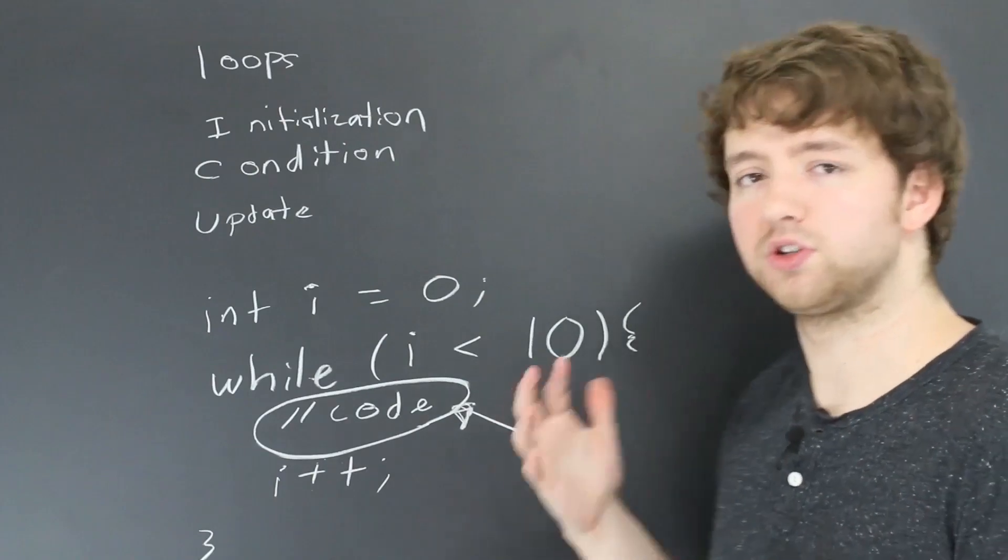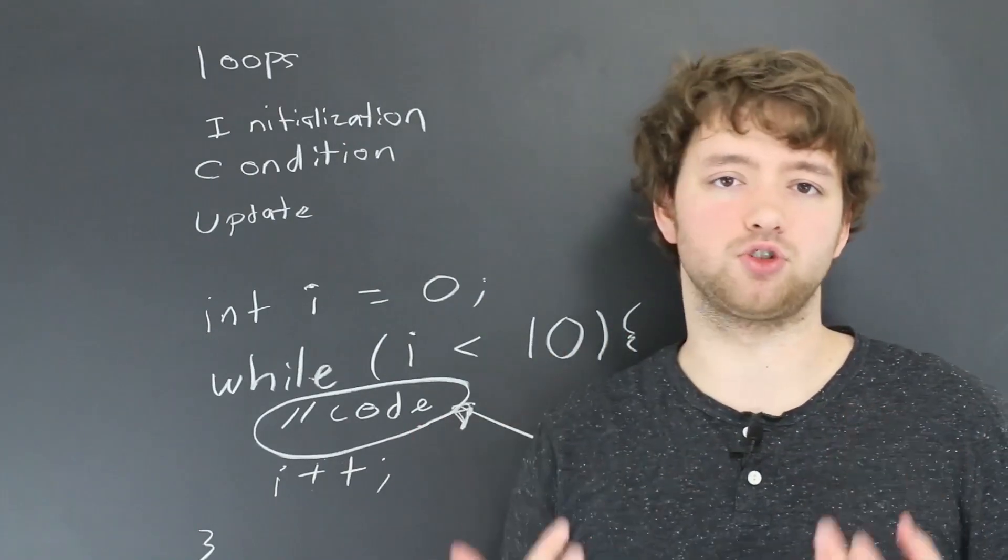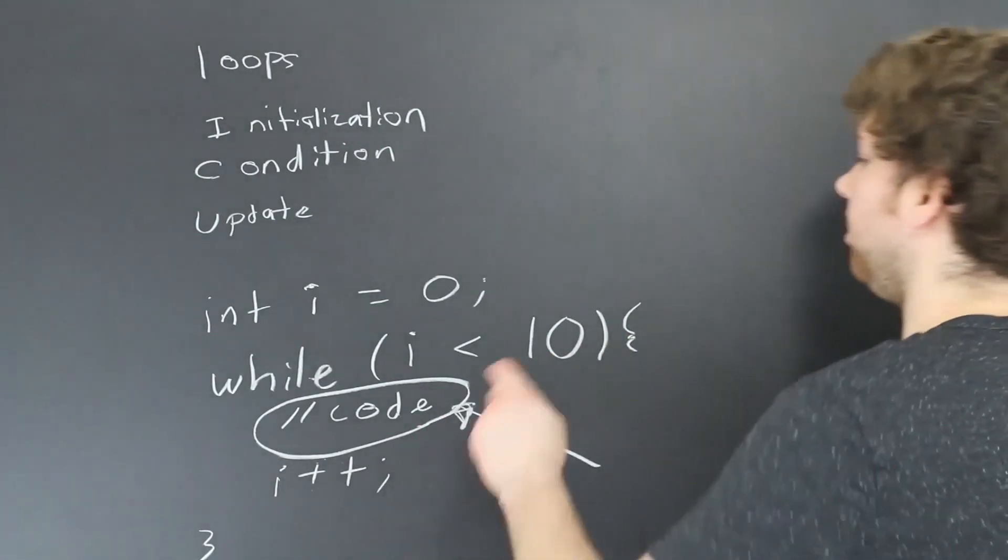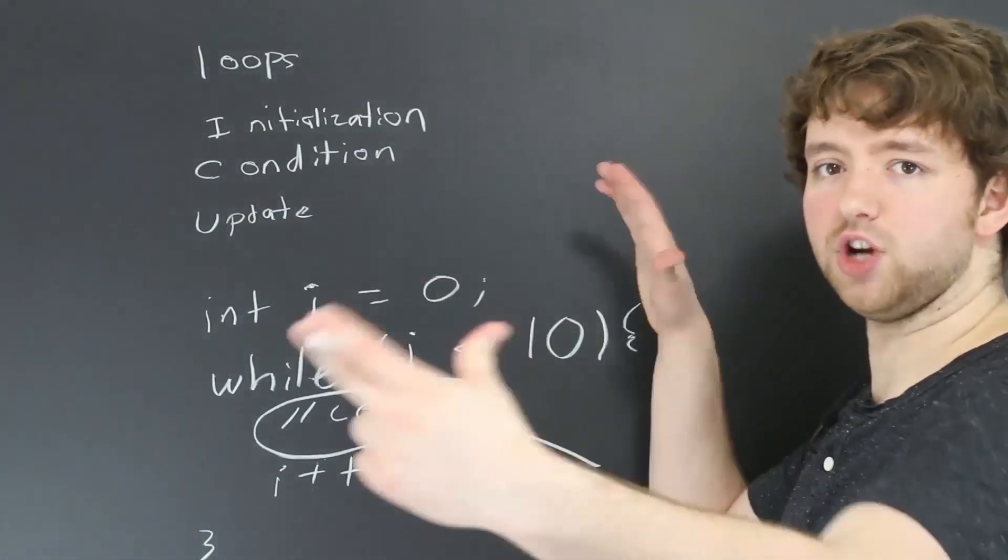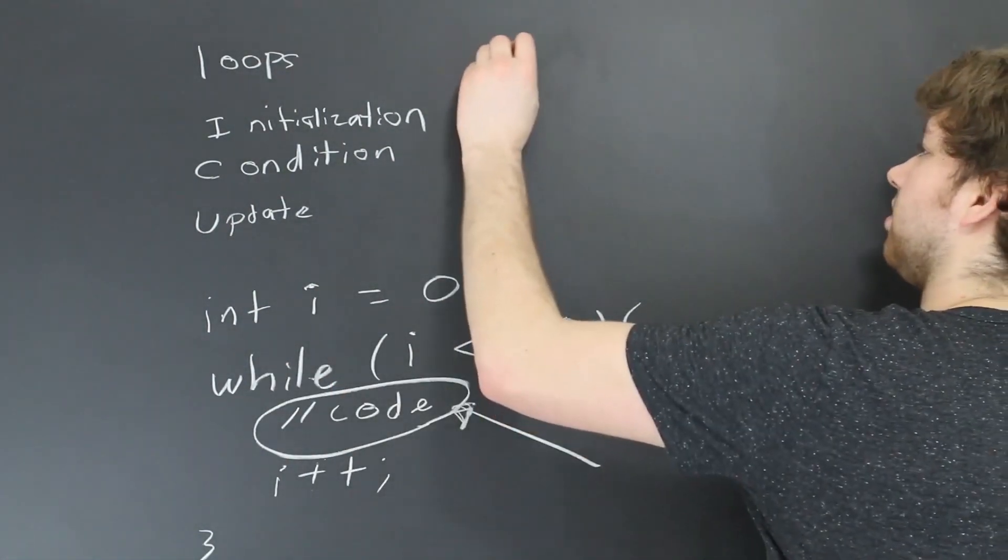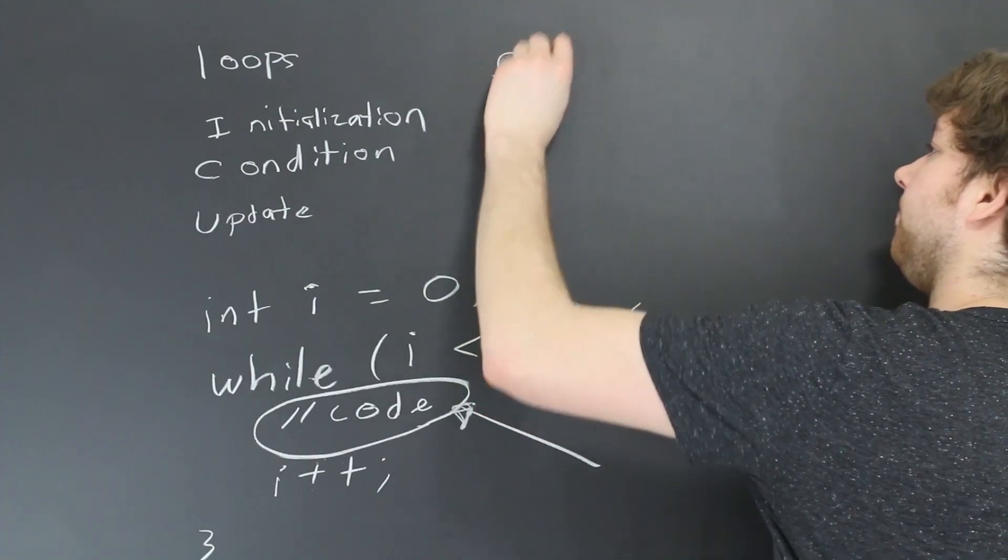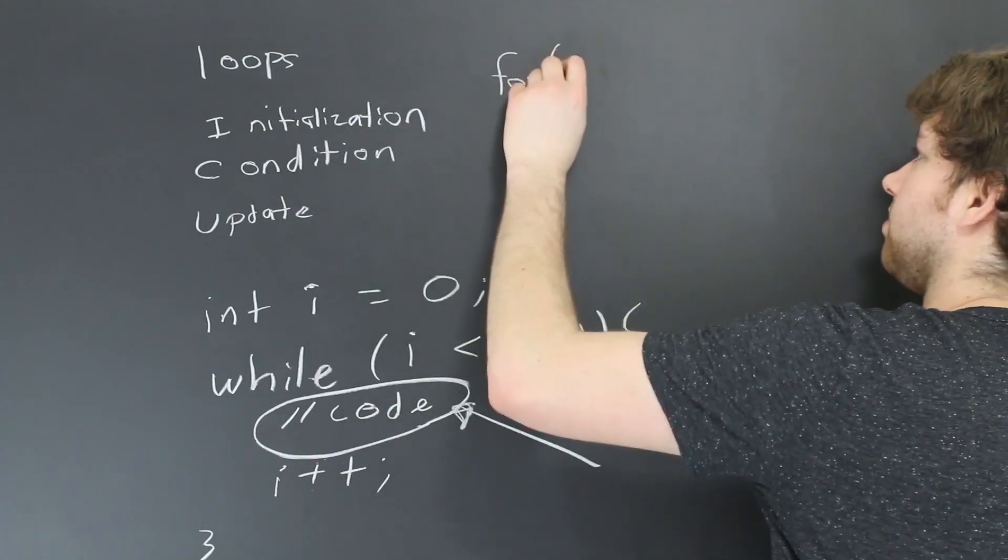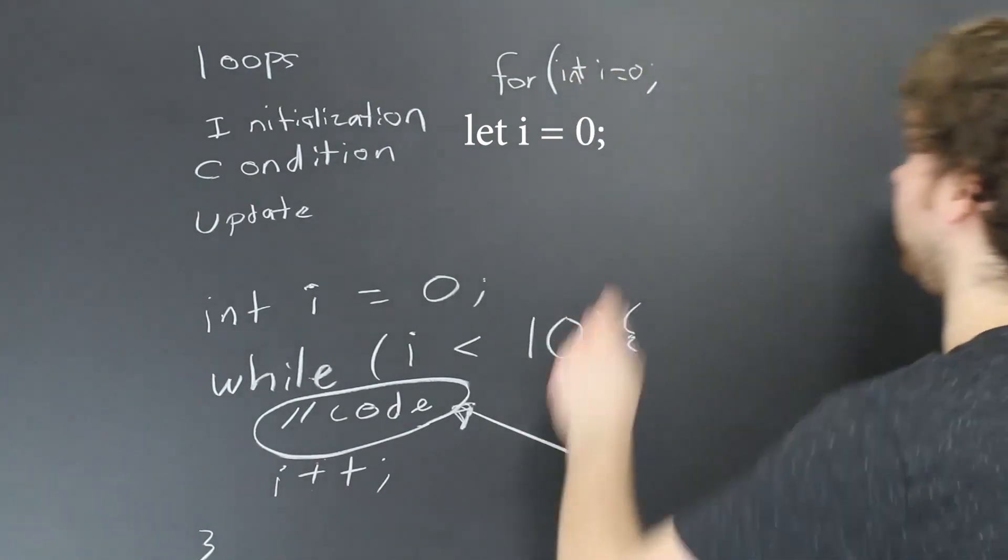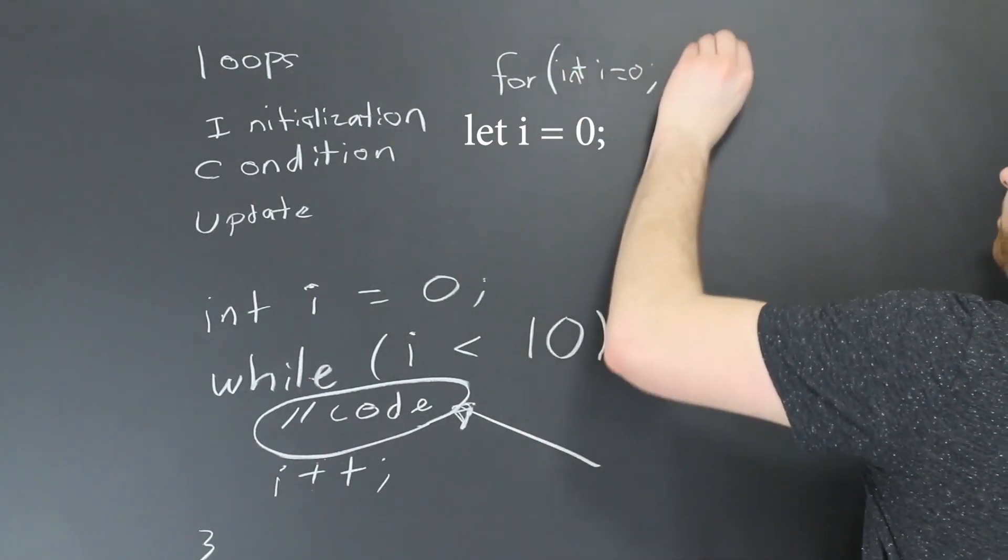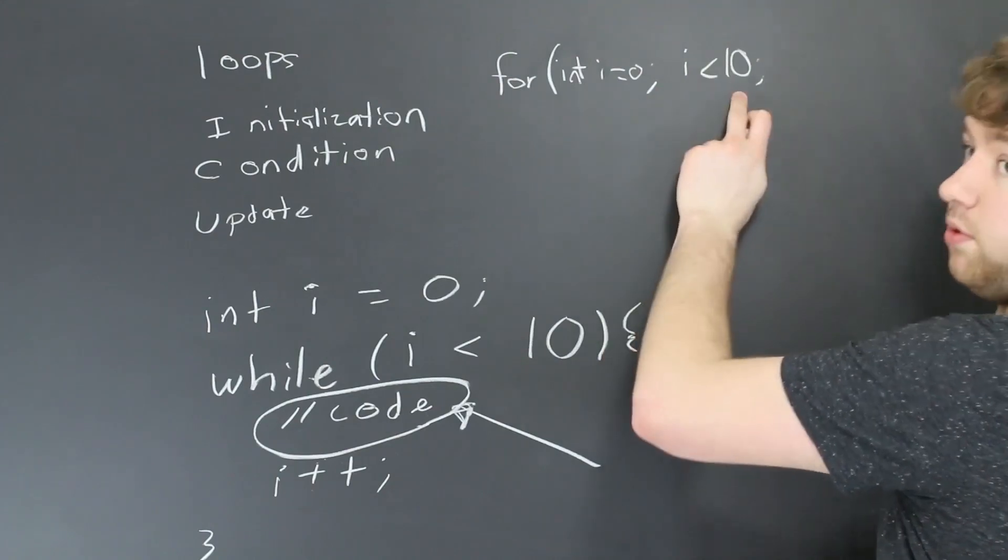There's also a for loop, which does essentially the same thing. It's just structured a little bit differently. And basically, it's going to take all three of these pieces and put it inside of a giant parentheses. So it'll look something like this. For, and then we have the initialization. So we say something like i equals zero. Then we have the condition. We can say i is less than 10. And we put semicolons between these.